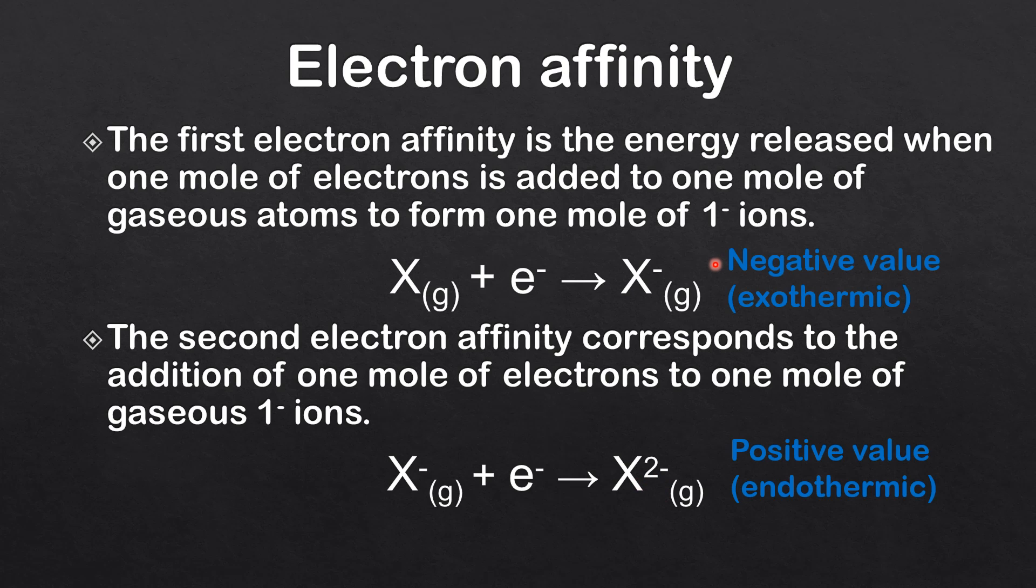The first electron affinity of an atom has a negative value which means it's exothermic, energy is released. However, the second electron affinity has a positive value, energy is absorbed, that means it's endothermic. The reason for this is the extra repulsion as you try to add an electron to a negative ion.